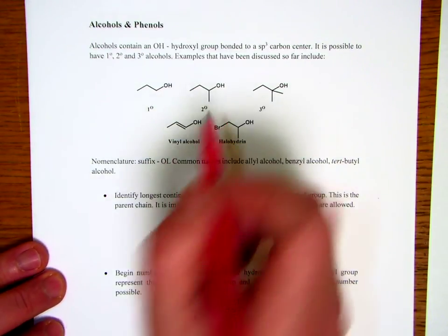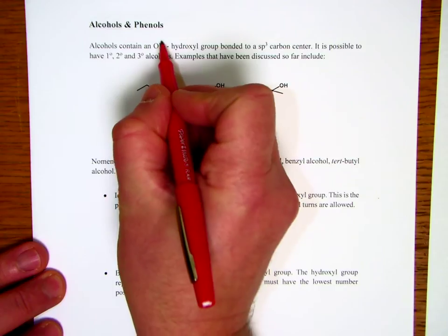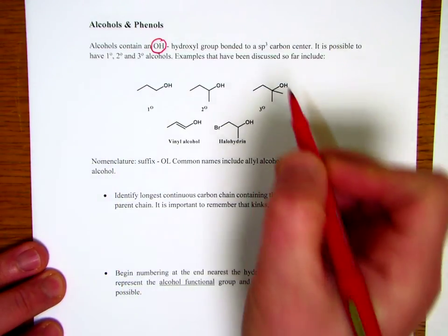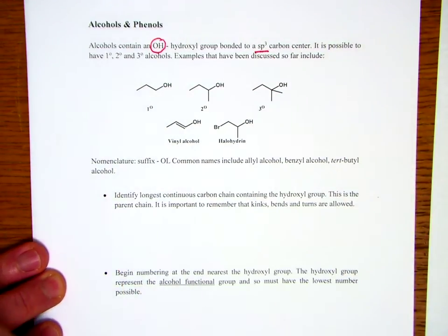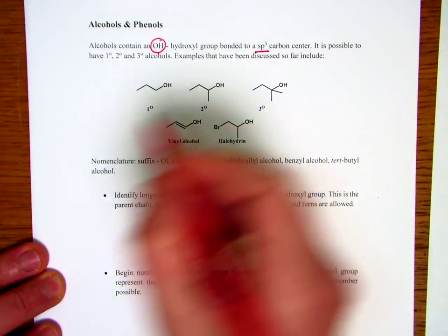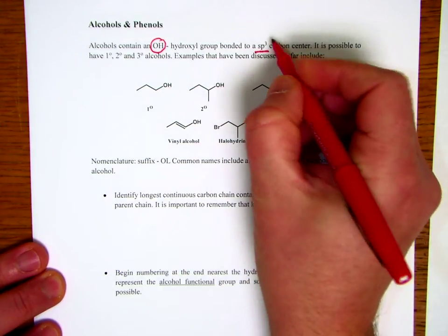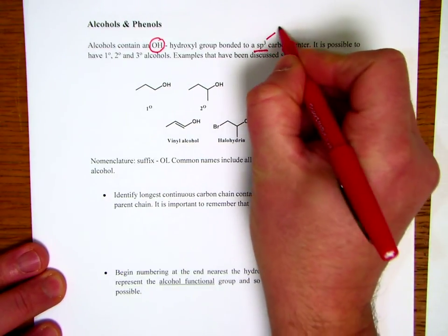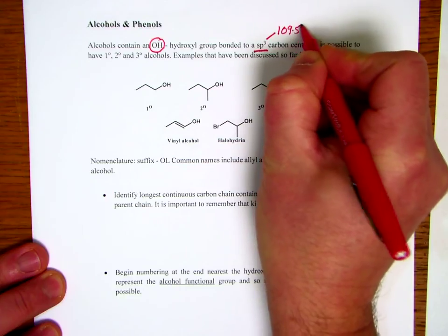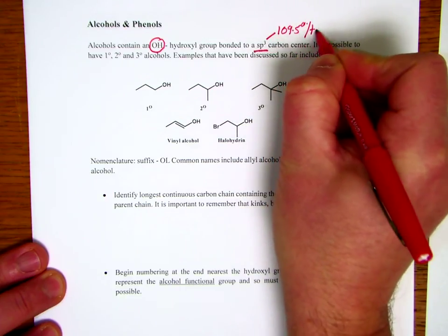Okay, so let's take a look at alcohols and phenols. We know that alcohols contain a hydroxy group, and this hydroxy group is attached to an sp3 center. The sp3 center is tetrahedral in geometry, angle of 109.5 degrees. It is tetrahedral.